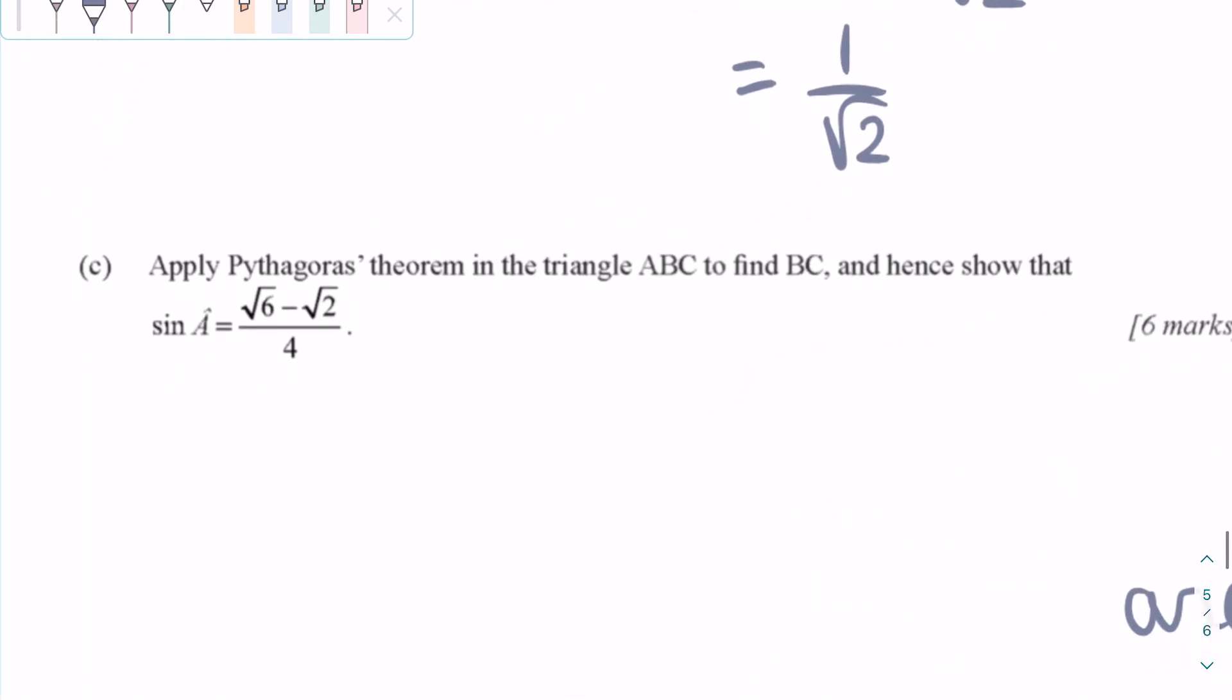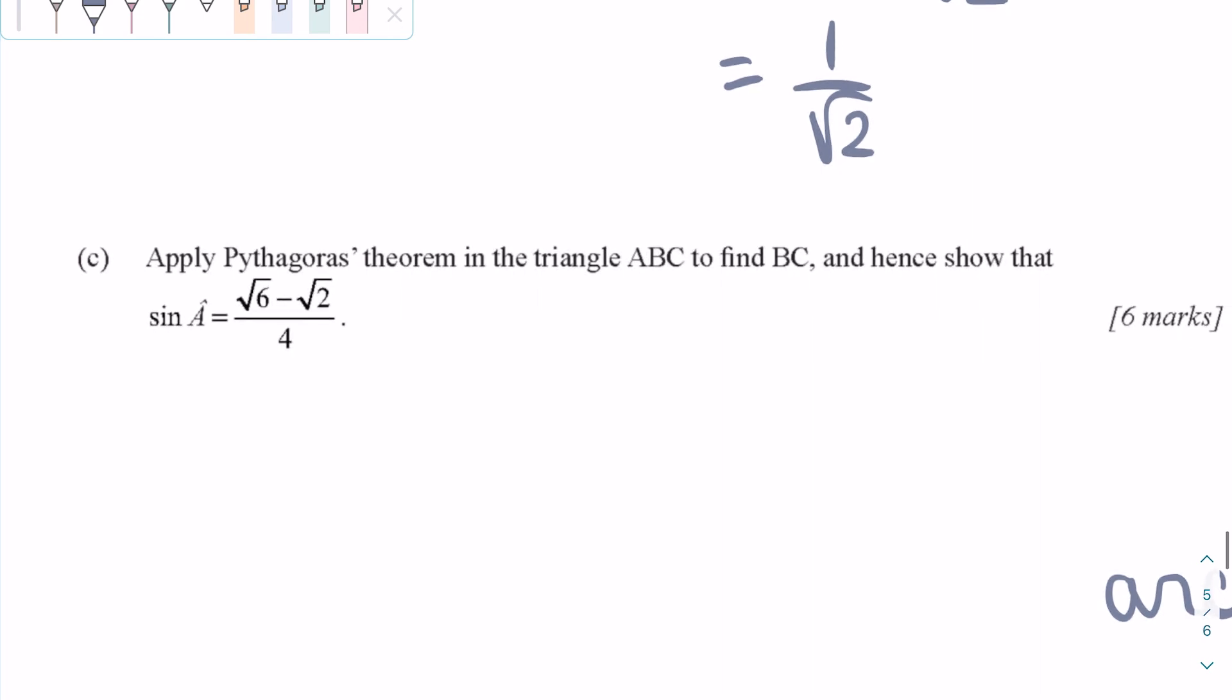For part C, we need to apply Pythagorean theorem in the triangle to find the unknown side BC, and show that sine A is equal to this equation.